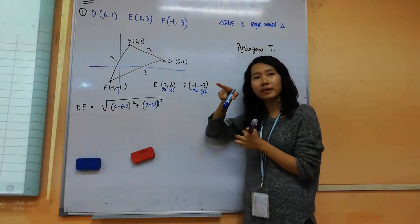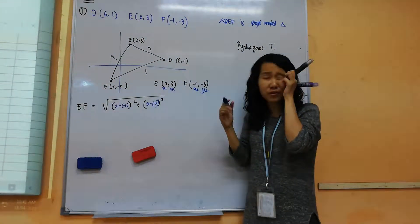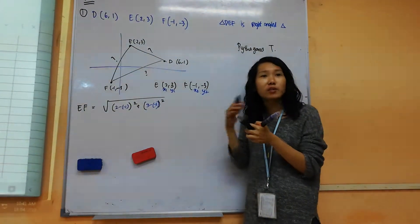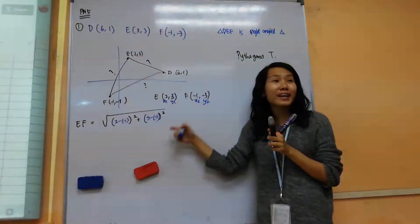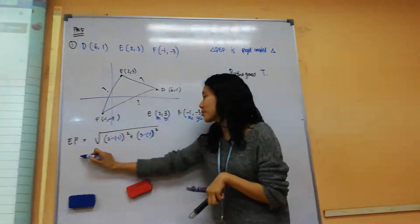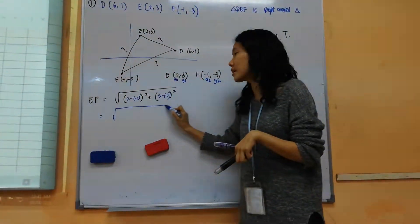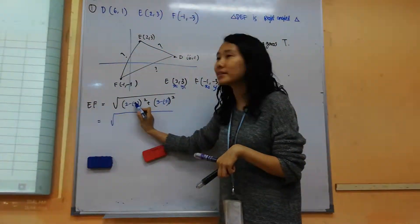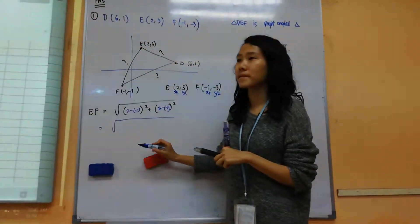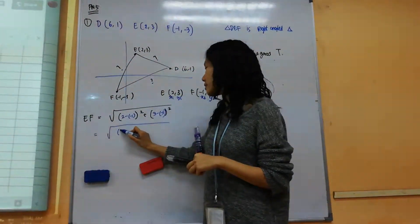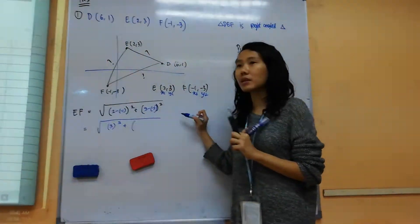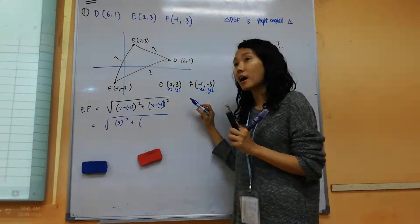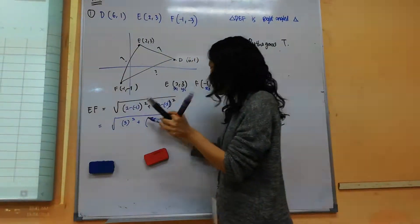Now I really like the way Jane does it. She knows she's going to get confused, so she labeled it first. It's okay to do that, rather than you get it wrong later. So now evaluate this for me. 2 minus negative 1, what do you get? 3, yes, 3 squared. Ruby, 3 minus negative 3. 6, yes, 6 squared.